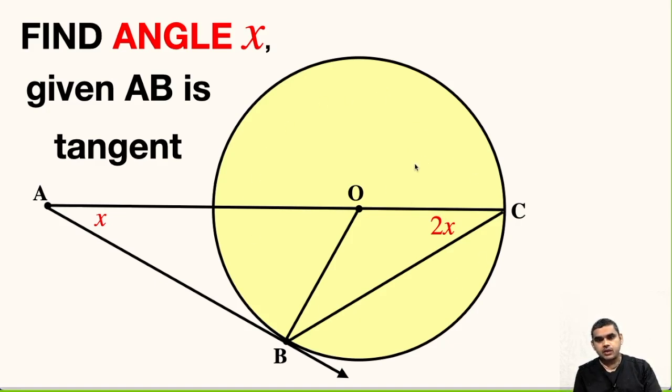Here a circle with center at O is given in which AB is tangent to it. This angle A is x degrees and angle OCB is given as twice of x.